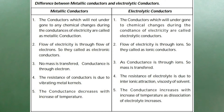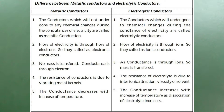Fifth difference: The conductance decreases with increase of temperature in metallic conductors — as temperature increases, the conductance will decrease, meaning resistance will increase. Whereas in electrolytic conductors, increase of temperature increases the conductance, because the dissociation of the electrolyte will increase with increase of temperature and more and more ions are available to conduct electricity. That is why increase of temperature leads to the increase of conductance of electricity in electrolytic conductors.